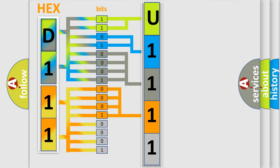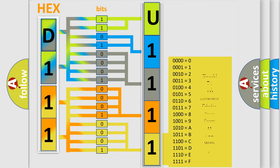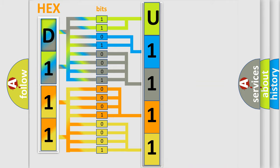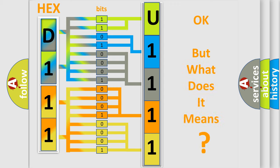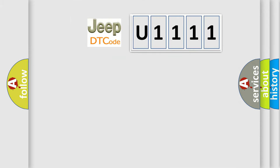The second byte is composed of a combination of eight bits. The first four bits determine the fourth character of the code, and the last four bits define the fifth character. A single byte conceals 256 possible combinations. We now know how the diagnostic tool translates received information into a comprehensible format. So, what does the diagnostic trouble code U1111 interpret specifically for Jeep car manufacturers?